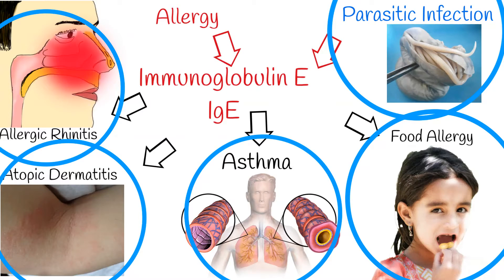A fraction of IgE antibodies is found in the plasma. If the IgE level is high in the blood, we can suspect several important diseases.